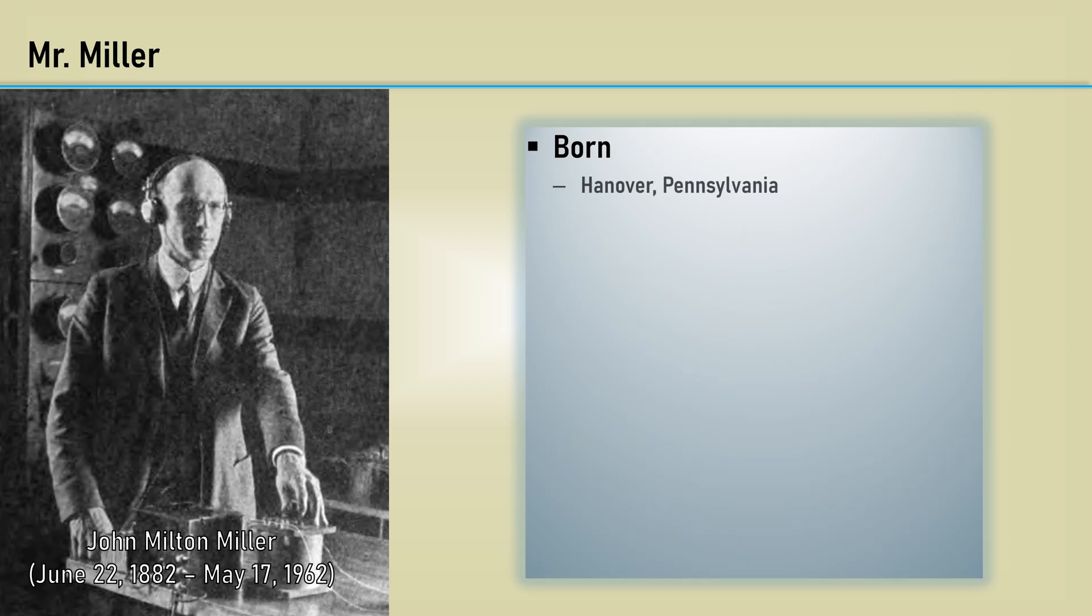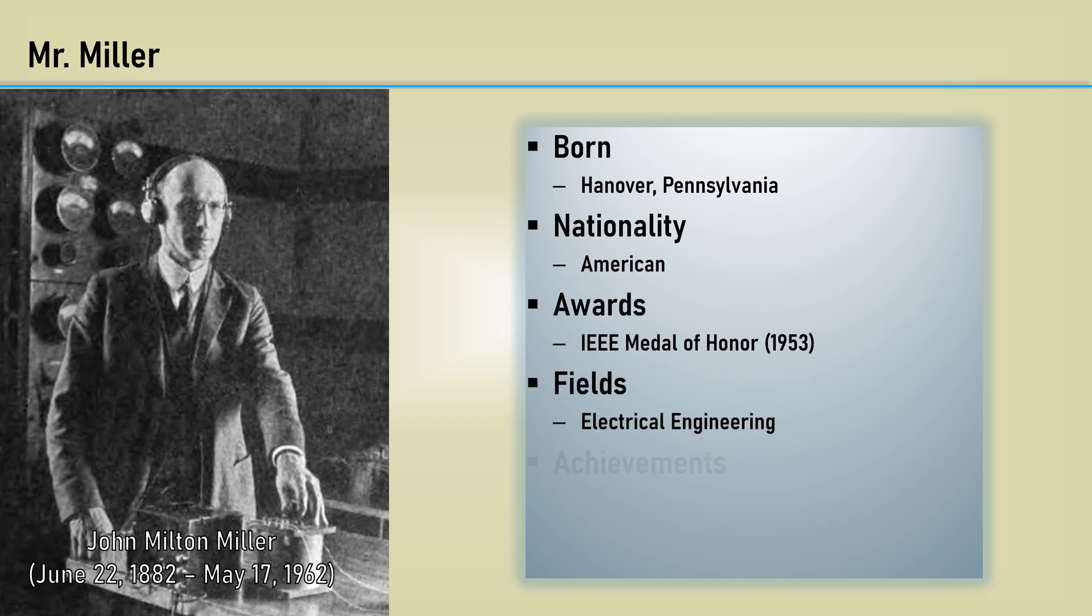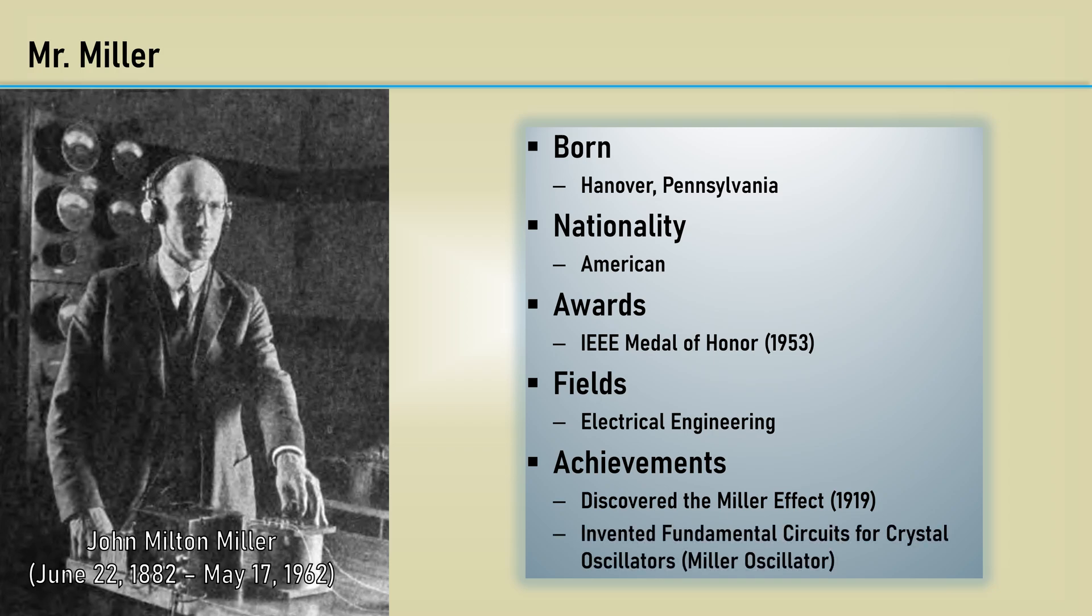John Milton Miller was born in Hanover, Pennsylvania in 1882. He was an American electrical engineer whose awards include the IEEE Medal of Honor in 1953. He discovered the Miller effect in 1919 while working on vacuum tube triode amplifiers. He also invented fundamental circuits for crystal oscillators.